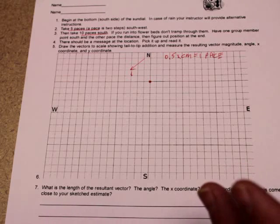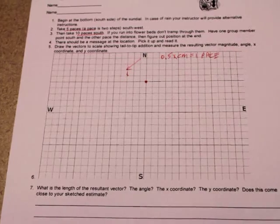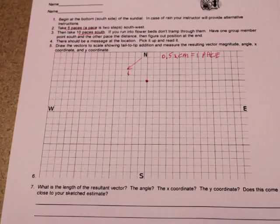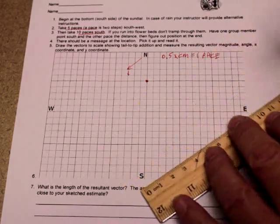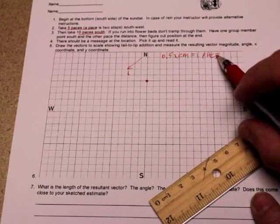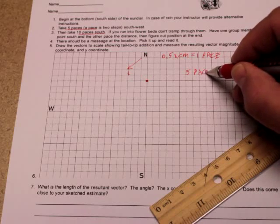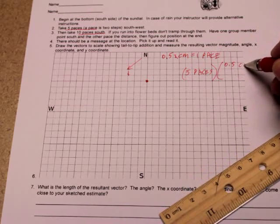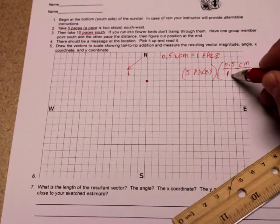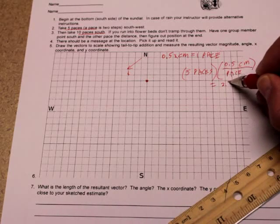And in the middle of the problem, you're looking and saying, this isn't going to fit on the paper. Change the scale. You start out with your best guess and go with it. And if something else needs to be better, then you go with that. Okay, so if half a centimeter is one pace, then five paces times 0.5 centimeters per pace works out to be 2.5 centimeters.